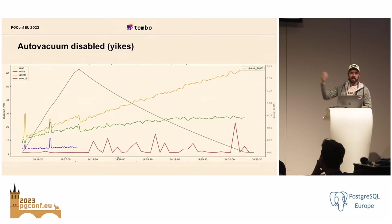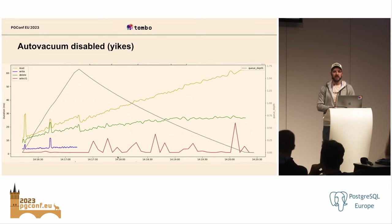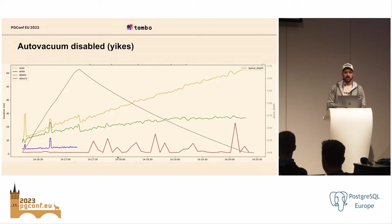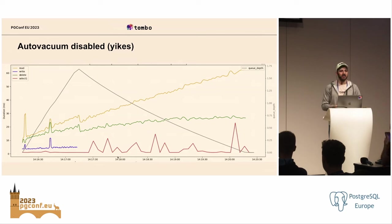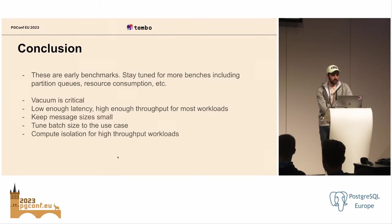Disabling auto vacuum is a consideration to keep in mind when running a queue on Postgres — if you're running other workloads on the same instance as your queue, and if you have a really long transaction running, auto vacuum could get blocked for a while, and it could have a big impact on high queue throughput. But there's still hope for queue on Postgres, because for partition queues, auto vacuum is less relevant. The conclusion: these are early benchmarks and we can do better. I'd like to run benchmarks longer, increase message size beyond one kilobyte, and benchmark partition queues. The takeaways: vacuum is absolutely critical if you're not running partition queues, latency is low enough for just about all queue use cases on Postgres, and throughput will probably be good enough for 99% of the planet.